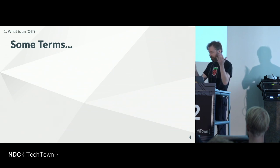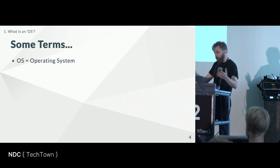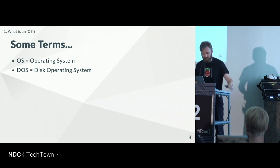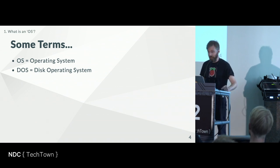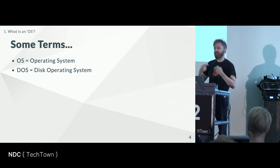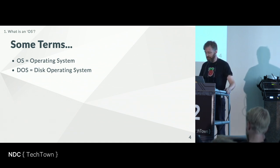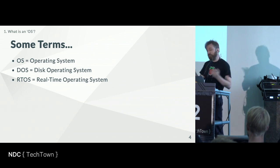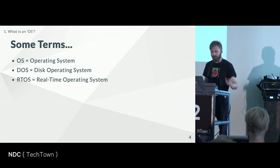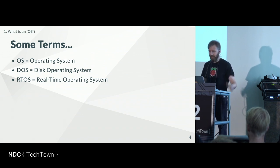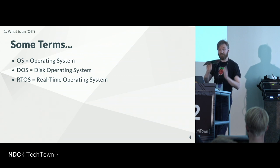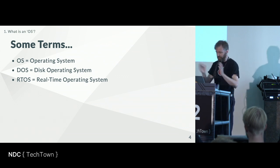Let's talk about what an operating system is. An OS — operating system — not to be confused with DOS, a disk operating system. There was a very famous DOS written by Microsoft, but when I say DOS I don't necessarily mean that one — I mean operating systems that work with disks in a wider sense. There's also the real-time operating system, but we're not really talking about those — those belong to the set of embedded systems, and this talk is not about embedded systems.